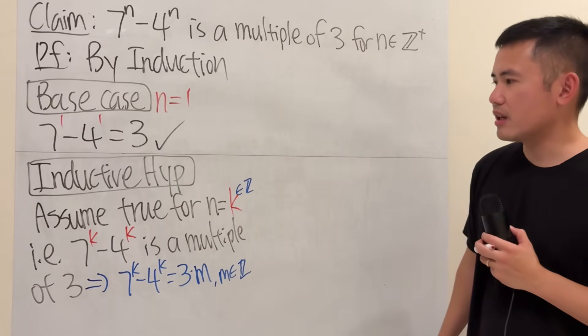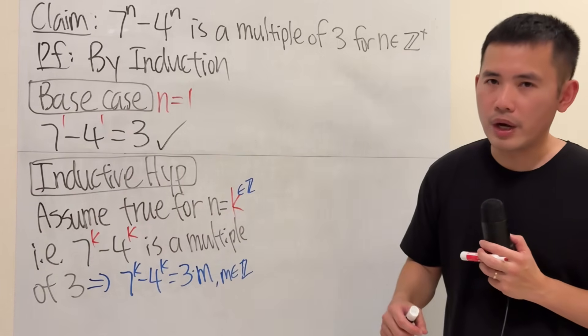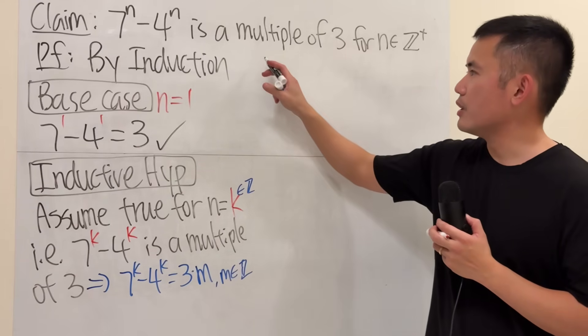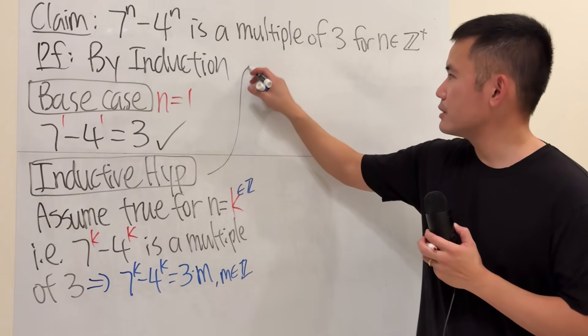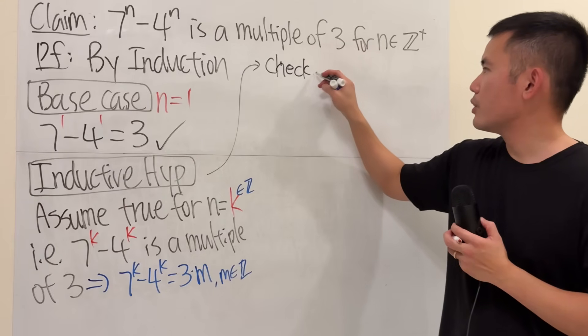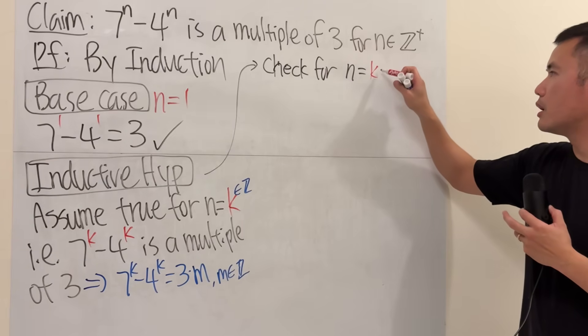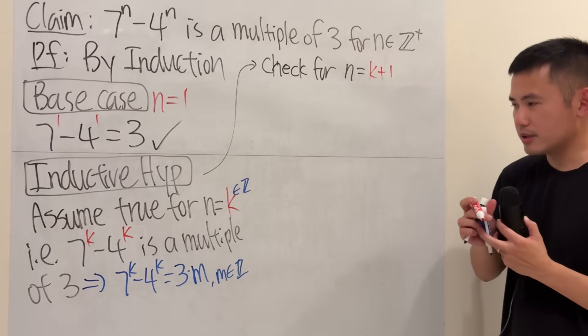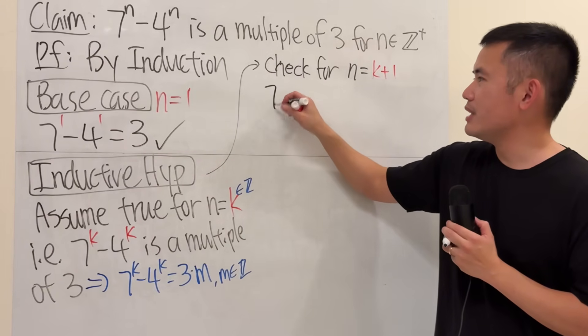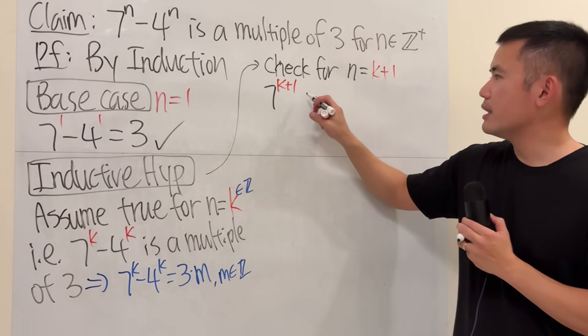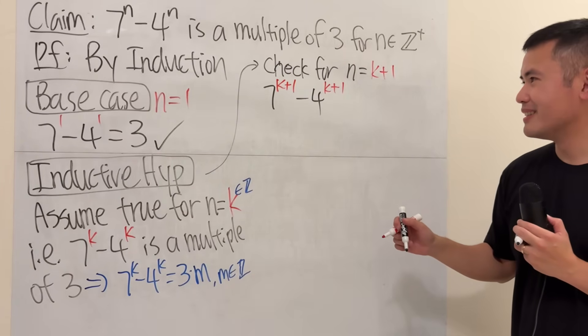Okay, now, once we have this inductive hypothesis, what we are going to do is that, can we use this to show the next one is also true? Here is the deal. We are going to check for n equals k plus 1. So now, let's just go ahead and plug in k plus 1 into that. So we are going to see 7 to the k plus 1, and then minus 4 to the k plus 1. So far, so good.